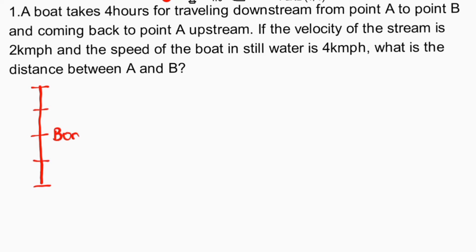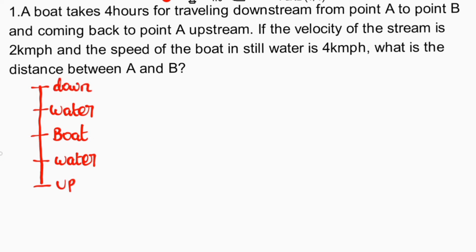Distance is to find. Looking at the diagram: upstream and downstream. The speed of the stream is 2 km per hour and the speed of the boat is 4 km per hour. Downstream speed is 4 plus 2 equals 6 km per hour; upstream speed is 4 minus 2 equals 2 km per hour.